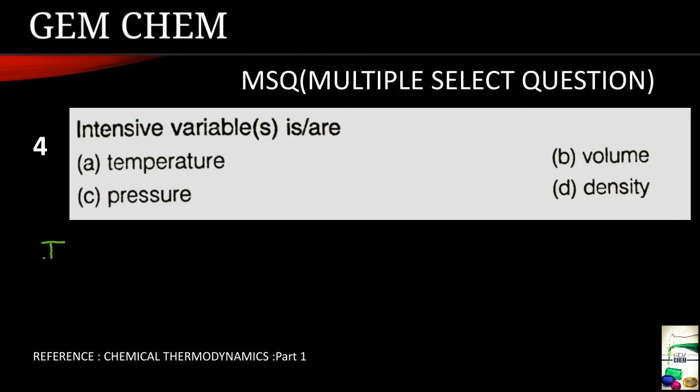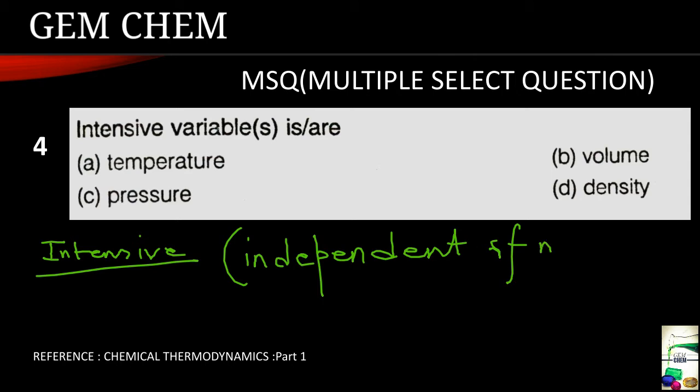Now intensive variable refers to those variables which are independent of mass. So our answer comes to be as temperature, pressure and density. These are independent of mass, whereas volume is dependent on mass.